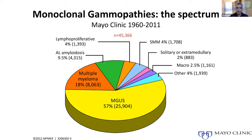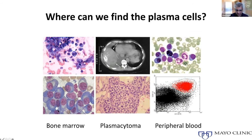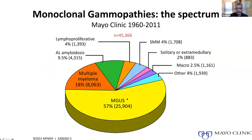When you think about the monoclonal gammopathies as a spectrum — and this is data from patients we've seen at Mayo Clinic over a long period of time — the vast majority of people who have a monoclonal protein in their blood or urine have monoclonal gammopathy of undetermined significance. This number is probably underrepresented because patients with conditions needing treatment like myeloma are more likely to be referred to a center like Mayo Clinic. In the community, 90-plus percent of patients with a monoclonal protein have what we call MGUS, as Jenny already mentioned.